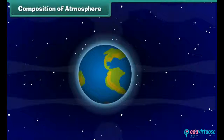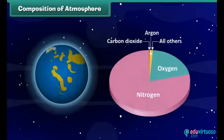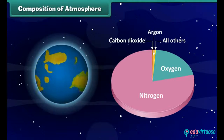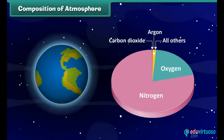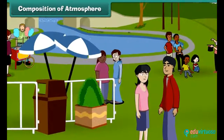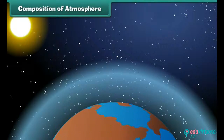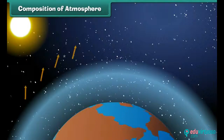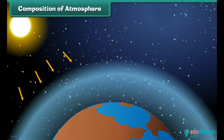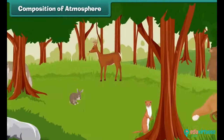The atmosphere is made up of a mixture of gases, primarily nitrogen and oxygen, that wrap around the earth like a blanket. Without the atmosphere, we would not be able to live here. It protects us from the dangerous rays coming from the sun and makes earth a perfect habitat for plants and animals.